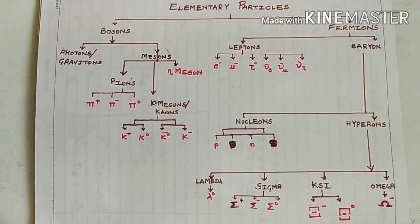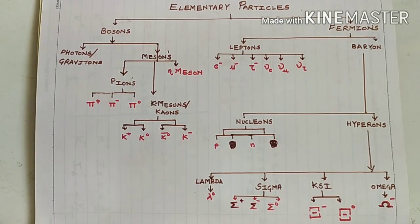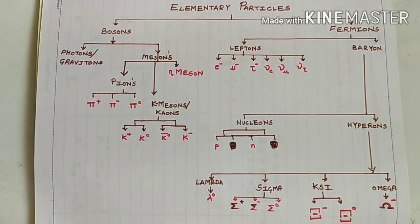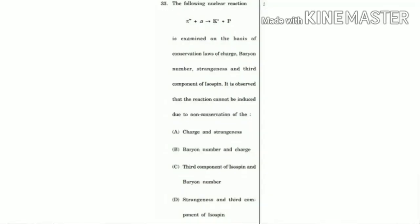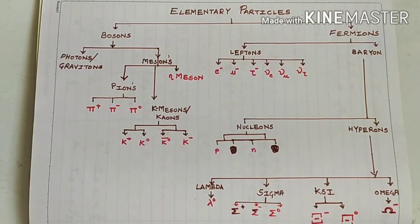Hello everyone, today we are going to understand some of the questions asked in SET examinations relating to the topic of elementary particles in nuclear physics. This question that you see on the screen is frequently asked in SET examinations. It generally includes a nuclear reaction and we have to see whether the reaction is valid under the conservation laws of quantum numbers of charge, strangeness, baryon number, isotopic spin, etc. We are going to understand what all these different quantum numbers are and how to solve this kind of problem.